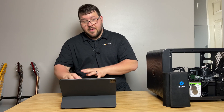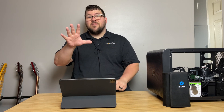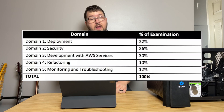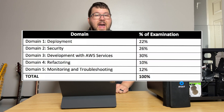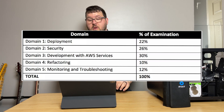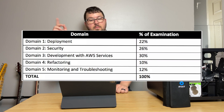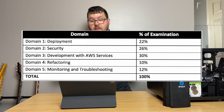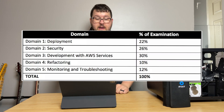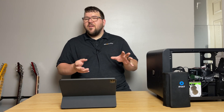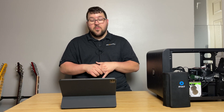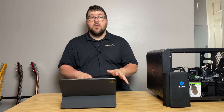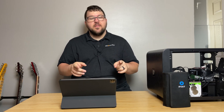The AWS Developer Associate exam is broken into five domains: deployment, security, development with AWS services, refactoring, and monitoring/troubleshooting. You'll see this on the diagram here in the video showing how it's broken up and the percentages each domain gives. You need about 72% — 720 points overall — to pass the exam.